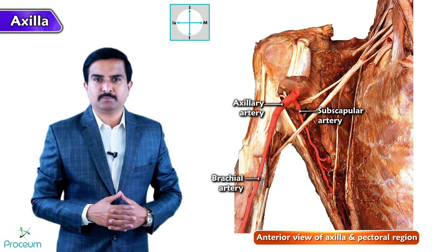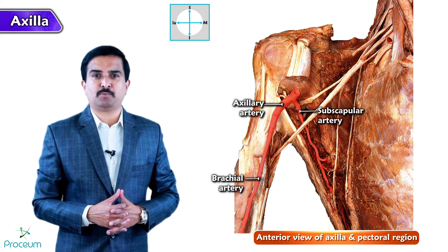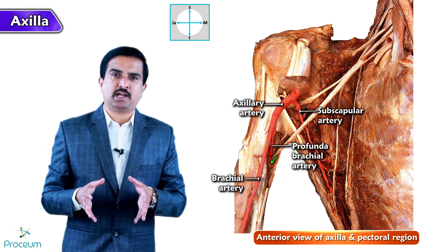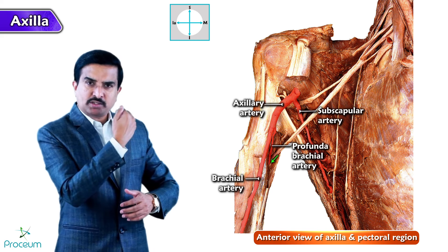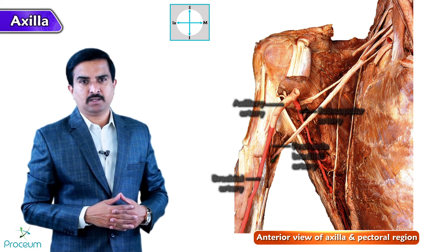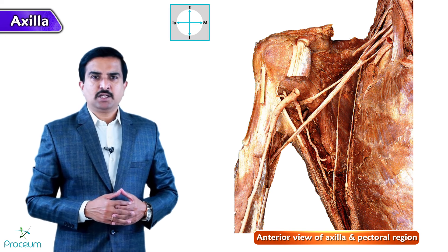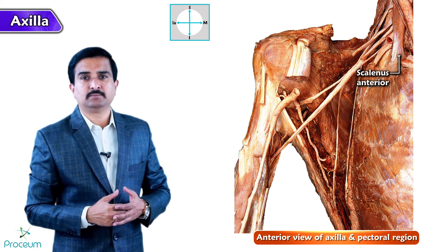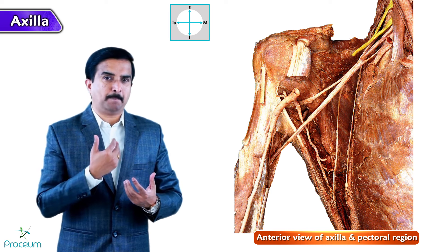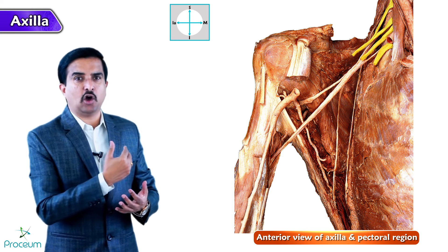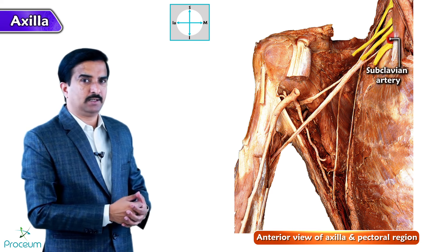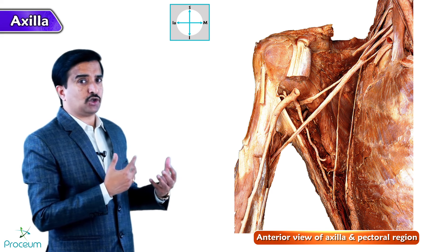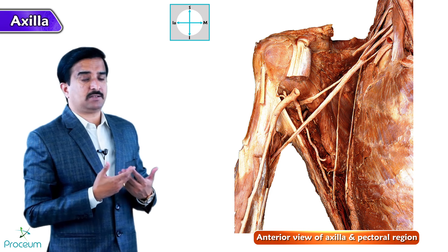Remember that the deep branch of the brachial artery is called the profunda brachii artery — it courses into the posterior compartment of the arm. On the medial side at the root of the neck, the scalenus anterior is well demarcated and the cut ends of the upper, middle, and lower trunks are seen along with the cut ends of the subclavian artery. We should try to correlate all these structures with gross anatomy textbooks.